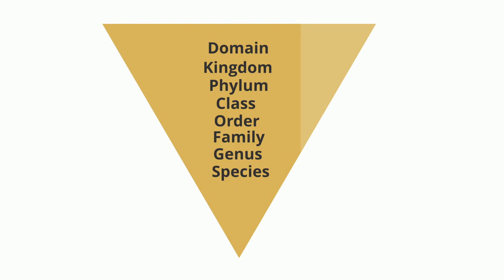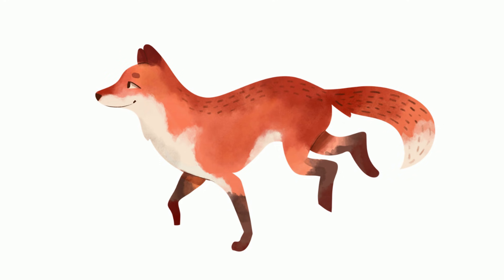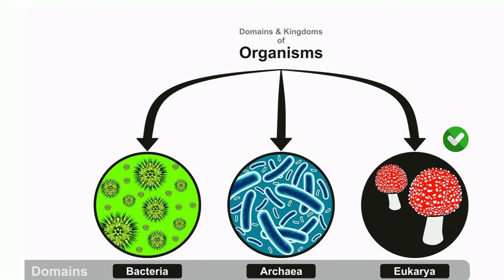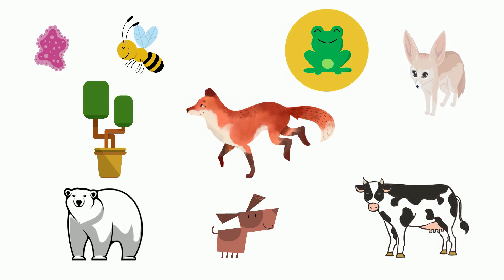Let's take a look at an example of a fox. We'll start at the domain level. There are three domains in all: Eukarya, bacteria, and archaea. Organisms that fall under the Eukarya domain have cells with nuclei, whereas organisms that fall under prokaryote or archaea have cells that lack a nucleus. Fox cells have nuclei and therefore are eukaryotic organisms. This eliminates bacteria, because bacteria does not have a nucleus.